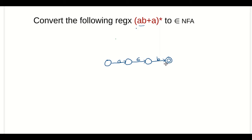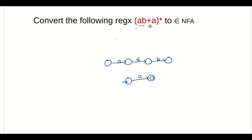So this is the epsilon-NFA that accepts aB. Now this will not be the final state in the combined epsilon-NFA, so we are removing that final state. Now let us modify it to accept aB union a. We draw the epsilon-NFA for 'a' only — with an initial state and a final state — alongside the epsilon-NFA for aB. Now we have to combine these two epsilon-NFAs using the union operation.